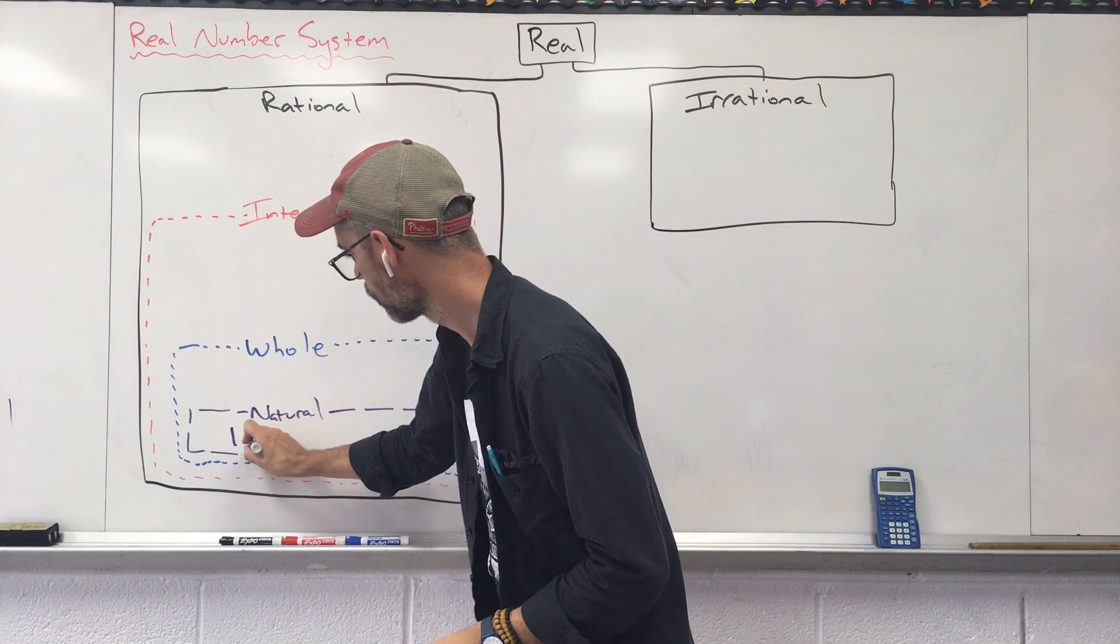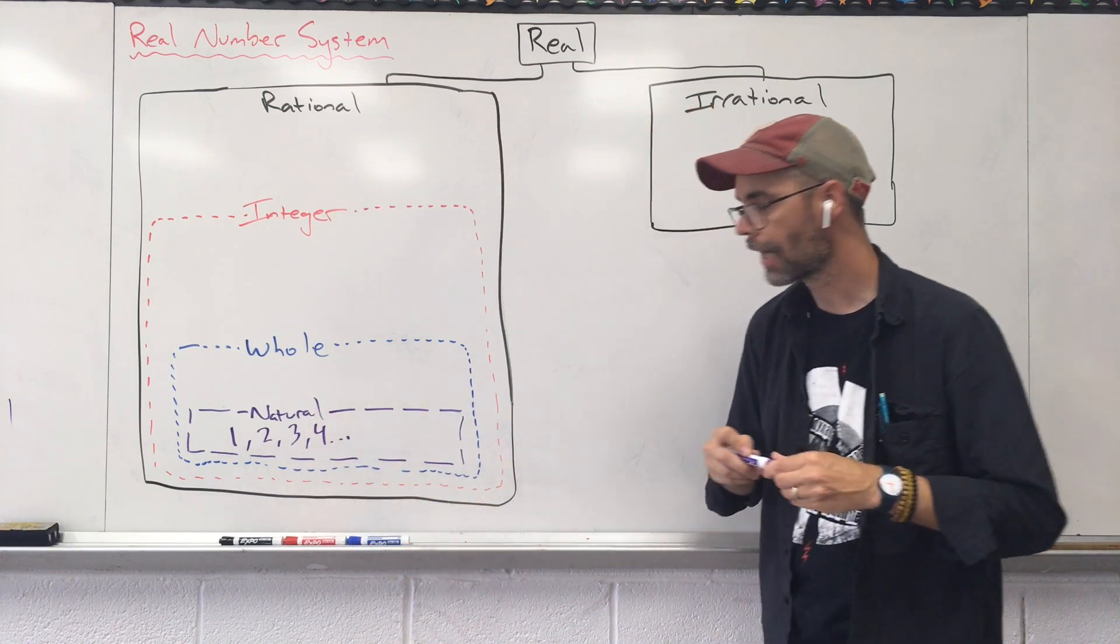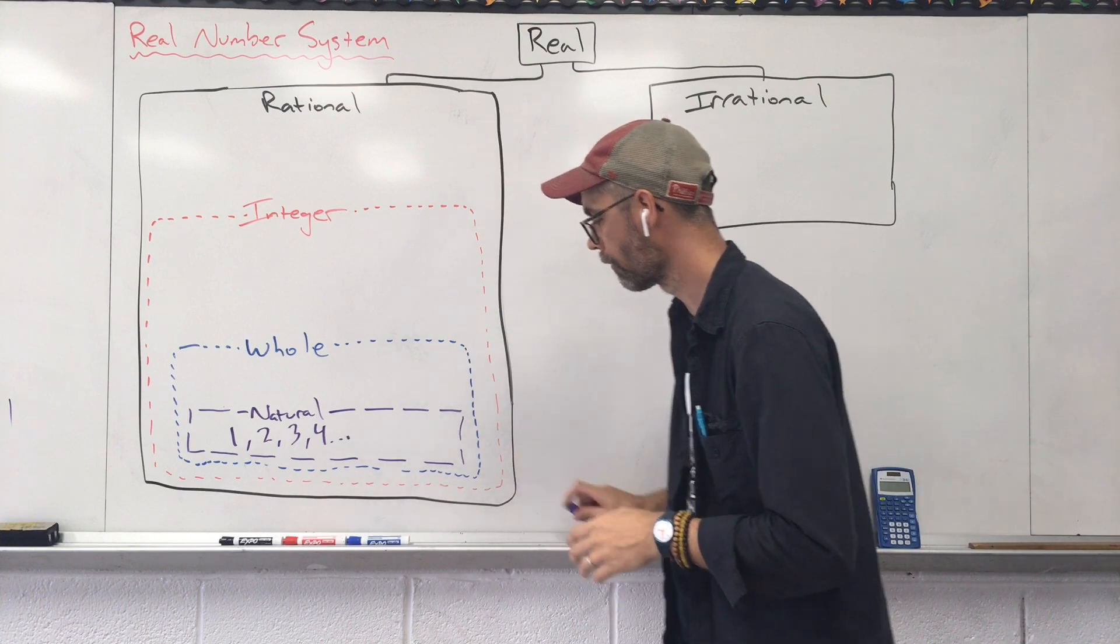So natural numbers, 1, 2, 3, 4, and I'm going to say dot, dot, dot, those dot, dot, dots mean these things just keep going on and on and on forever.